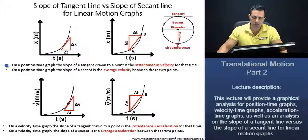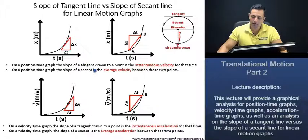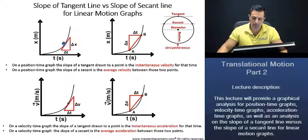On a position time graph, the slope of a tangent drawn to a point is the instantaneous velocity for that time. So that there is the instantaneous velocity.